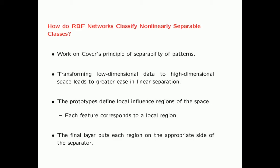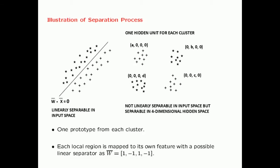The prototypes define local influence regions in the space. In each hidden unit, you have a prototype vector, and if an input point is close to that prototype vector, the hidden unit will have a high activation value; otherwise, the activation is very close to zero because of the Gaussian RBF kernel. The final layer puts each of these features on the appropriate side of the separator.